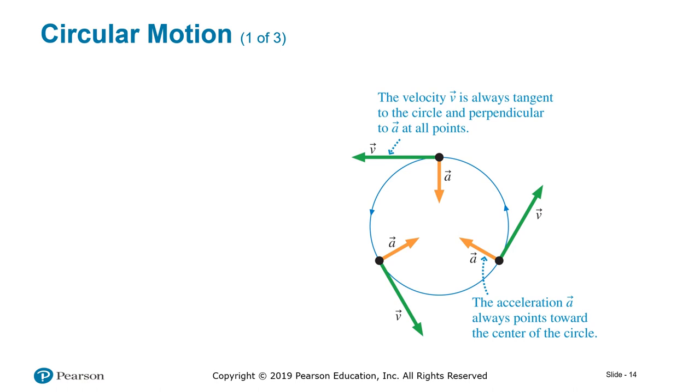The velocity vector is always tangent to the circle and it's perpendicular to the acceleration. Tangent to the circle, perpendicular to the acceleration.